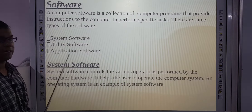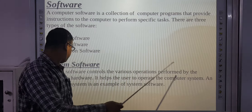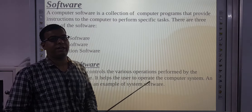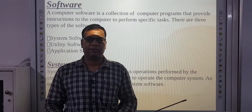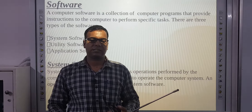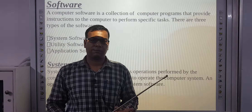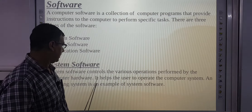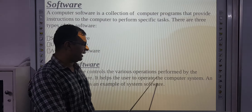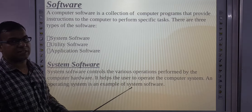System software controls the various operations performed by the computer hardware. Without system software — also called the operating system — we cannot operate the computer. It helps the user to operate the computer system. An operating system is an example of system software.